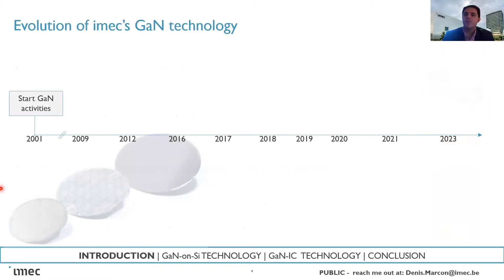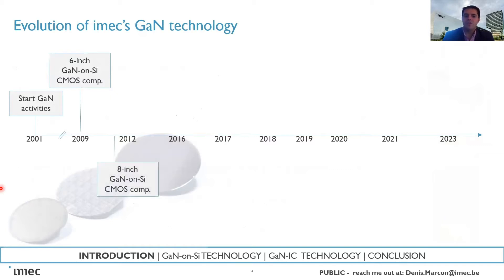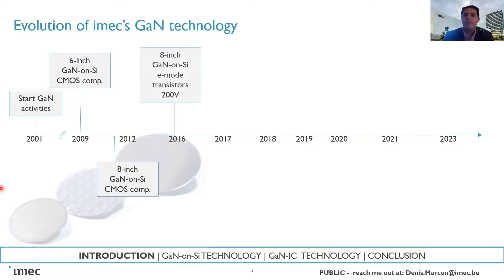At iMac we have been working on GaN for more than 20 years. We started around 2000 and soon realized the need to develop a technology compatible with CMOS, so it can run in any CMOS line. In 2009 we first demonstrated 6-inch GaN-on-silicon CMOS-compatible technology, and around 2012 we showed the possibility of putting 8-inch GaN-on-silicon wafers into the CMOS line, realizing power devices using gold-free metallization compatible with CMOS. By 2016 we focused on 8-inch GaN-on-silicon e-mode transistors for 200 volt applications, and one year later enabled 650 volt GaN-on-silicon e-mode transistors.